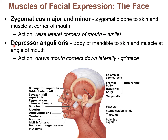Just the opposite is the depressor anguli oris. Depressor means pulling down, and oris is the muscle term for mouth. So this muscle pulls the corner of the mouth down at an angle — the depressor anguli oris. Doing that allows you to frown or grimace, kind of the opposite of a smile.